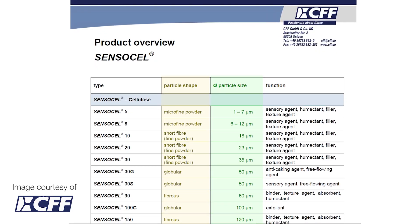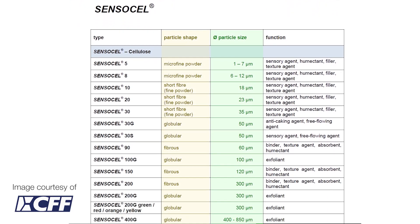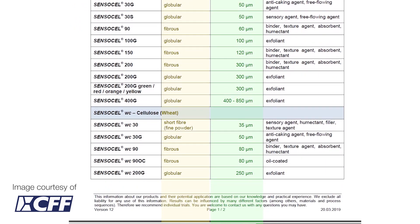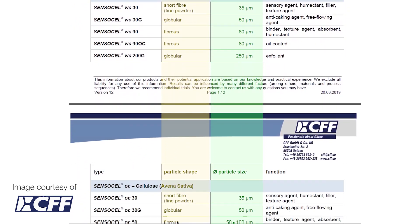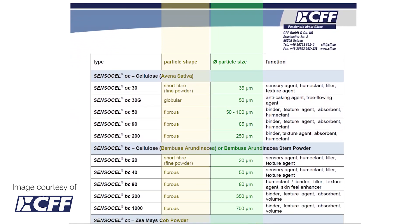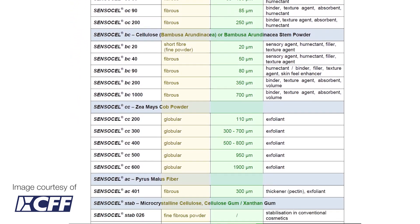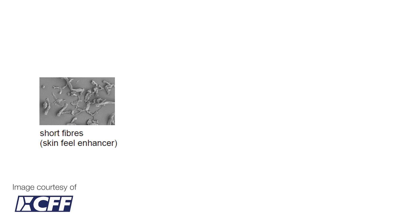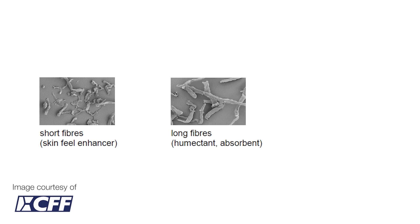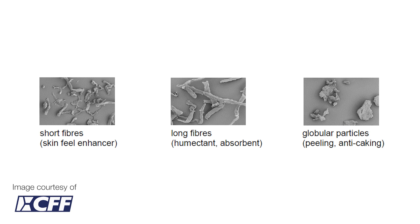First, let's look at how cellulose might differ when we look up really close. You can get various particle sizes, from one micrometre up to 1000 micrometre. You can get short fibres — these are the types of materials used for skin feel enhancing and soft focus effects. You can get long fibres, which are ideal for absorbent properties. And you can get globular particles, which are ideal for peeling and anti-caking.